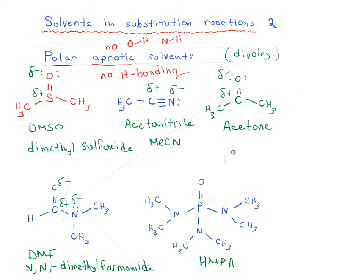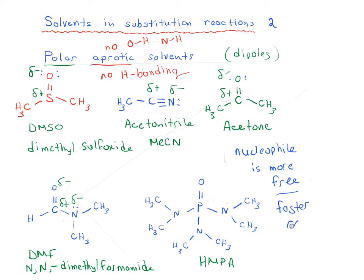If we use a polar aprotic solvent, the nucleophile is more free than it would be in a polar protic solvent. Because the nucleophile is more free, it's going to be a faster reaction, which is better for SN2. It leads to increased rates for SN2 reactions because there's no hydrogen bonding affecting our nucleophilicity.